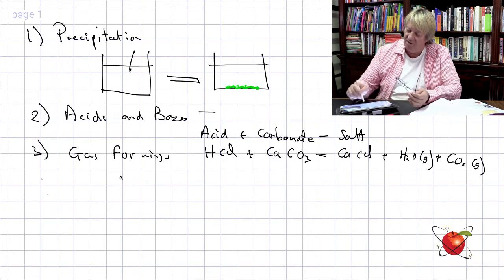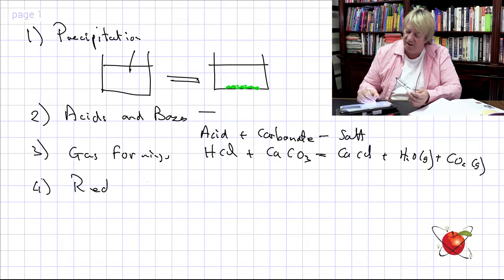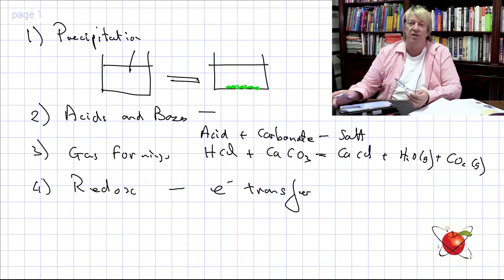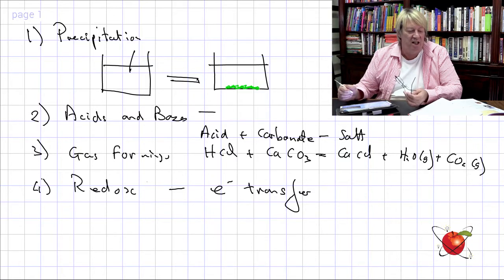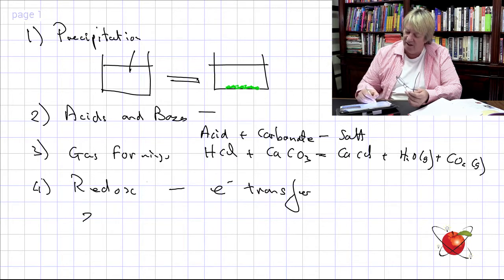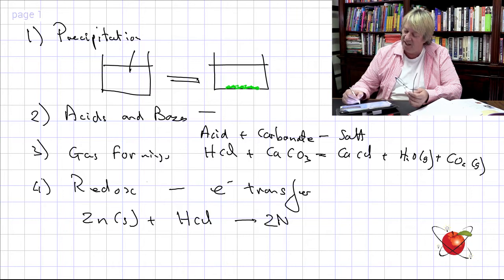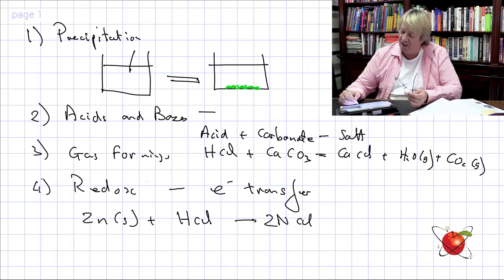The last one is redox — oxidation-reduction — which is electron transfer. Electrons are transferred. The reaction here: zinc solid is added to an acid, HCl, and the result is zinc chloride ZnCl₂ and H₂ gas given off.